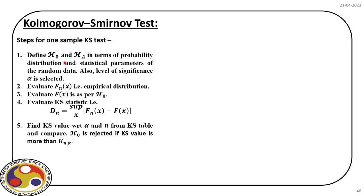The steps in the KS test are: first, set the null and alternative hypothesis; then set the level of significance α. Based on observations, find the empirical distribution Fₙ(x) using the expression already explained. Then evaluate F(x), which is the CDF for the null hypothesis proposal. Based on these two, find the KS statistic Dₙ.